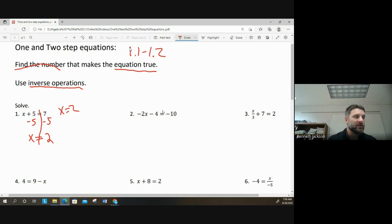For example, on number two, maybe we can't just look at this and know the answer. Maybe I don't know what number times negative 2 minus 4 is equal to negative 10. And I don't need to know the answer off the top of my head. What I need to be able to do is perform inverse operations. So the opposite or inverse of minus 4 is plus 4. To get rid of a minus 4, I can add 4. That would make those go away.